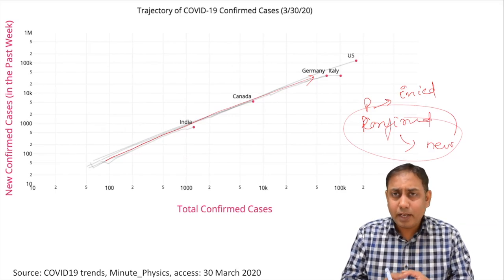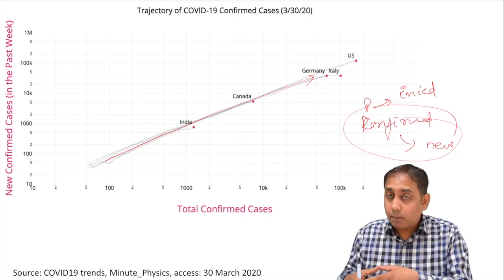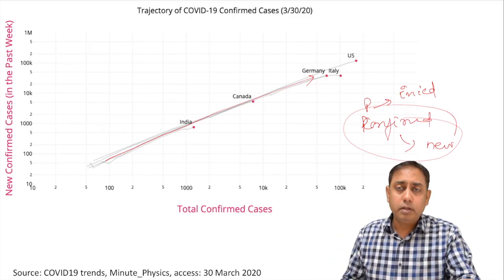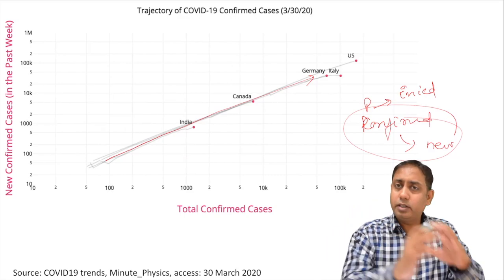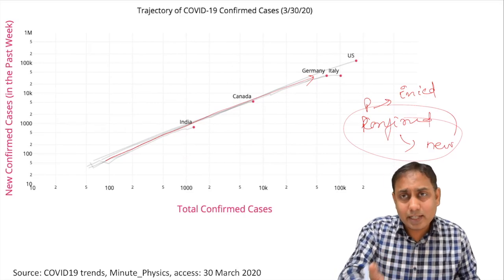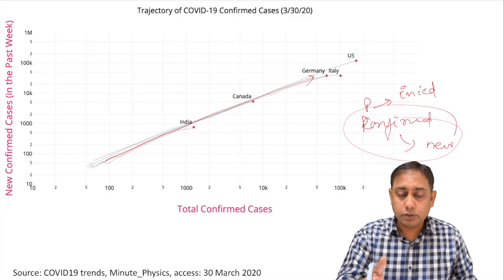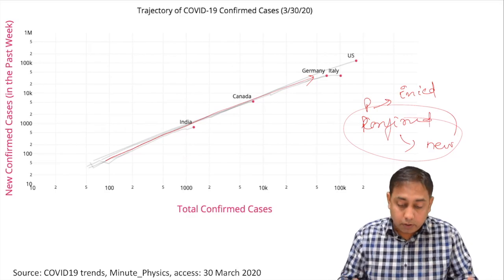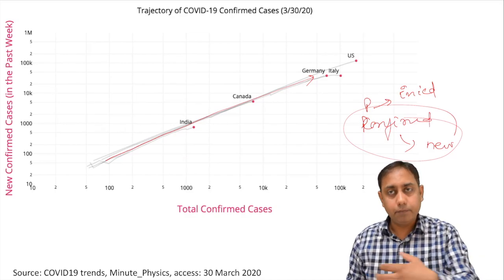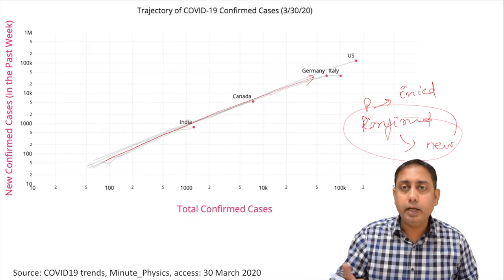Whether we test or don't test is a separate matter — testing costs money, requires manpower, and every country has its own strategy. I'm not criticizing any country. My point is that the public health message should be clear: the trajectory is the same, it does not vary country to country. The virus is the same, mankind is the same, the chances of communicability are the same. It all depends on us how we interpret these numbers.